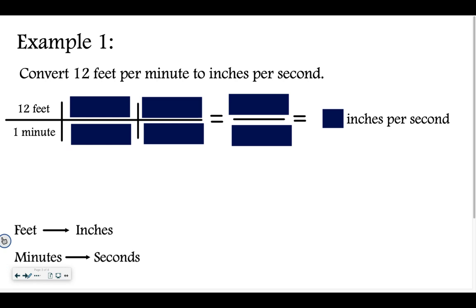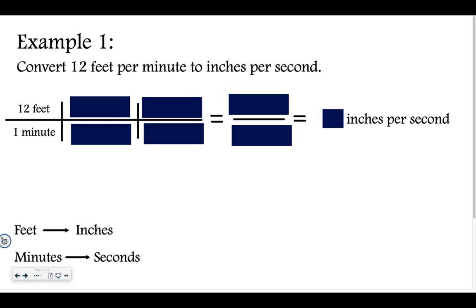Looking at example 1, we want to convert from 12 feet per minute to inches per second. So I have two different types of measurements: a distance — feet and inches — and also time — minutes to seconds. I wrote those down here. Feet to inches: 1 foot equals 12 inches. Minutes to seconds: 1 minute equals 60 seconds. So I have to convert feet to inches and minutes to seconds.